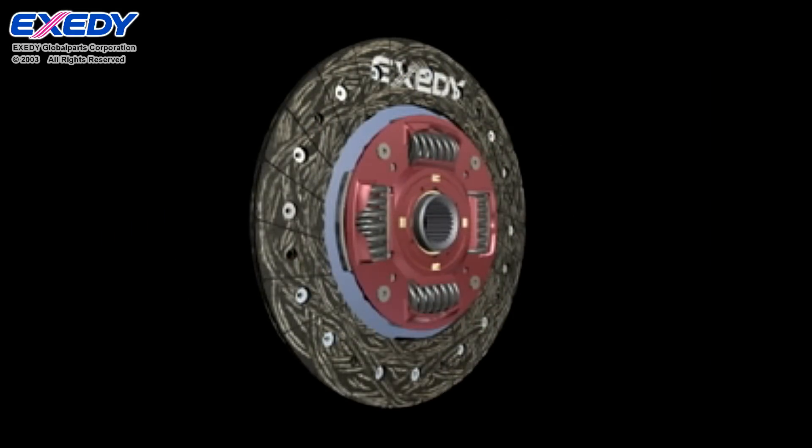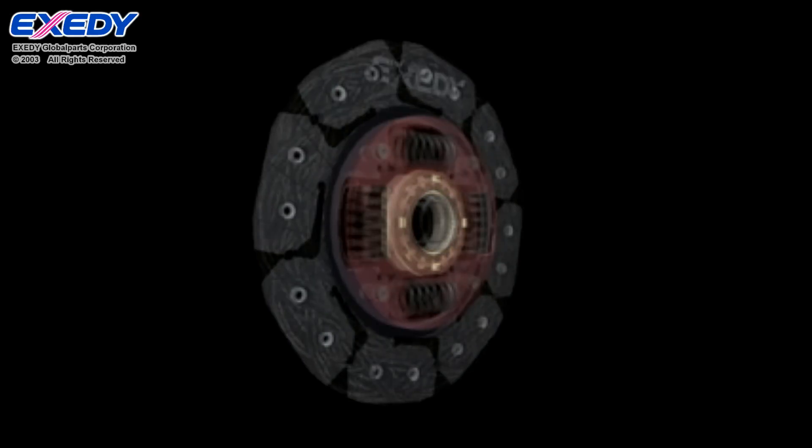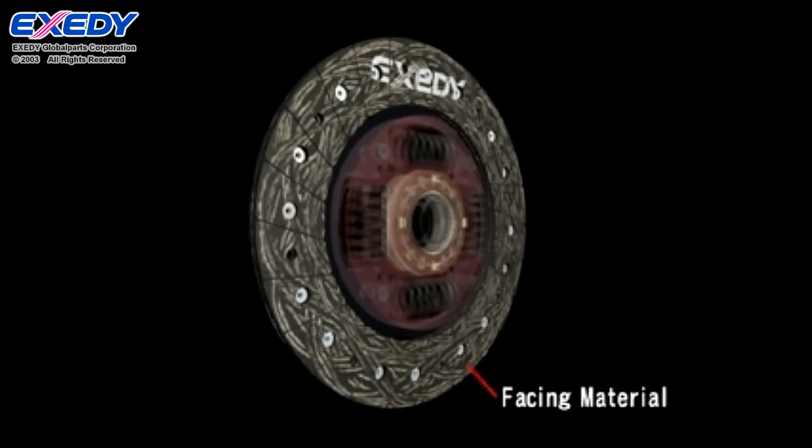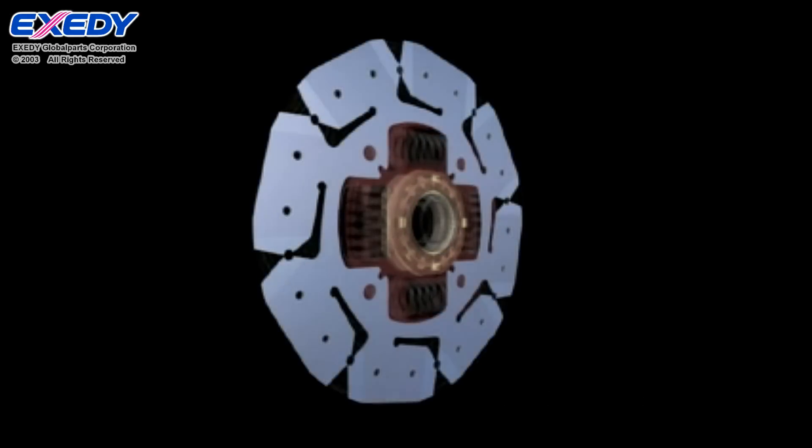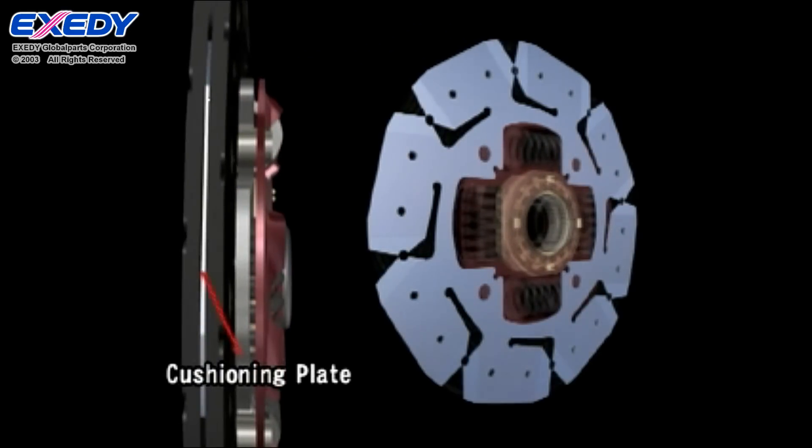Next, looking at the clutch disc assembly, engine torque is first transmitted from the pressure plate to the facing material. This facing material is supported by the cushioning plate, which makes half-engaged clutch control possible.